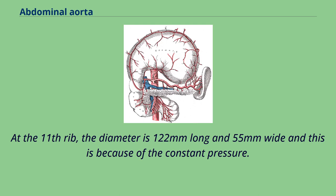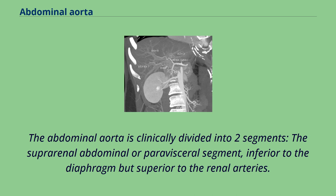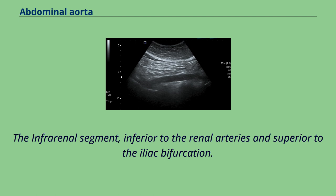At the 11th rib, the diameter is 122 mm long and 55 mm wide, and this is because of the constant pressure. The abdominal aorta is clinically divided into two segments: the suprarenal abdominal or paravisceral segment, inferior to the diaphragm but superior to the renal arteries, and the infrarenal segment, inferior to the renal arteries and superior to the iliac bifurcation.